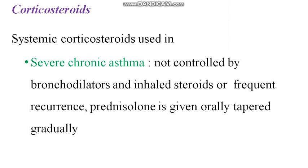Systemic corticosteroids are used in severe chronic asthma when it is not controlled by bronchodilators and inhaled steroids, or when there are frequent recurrent episodes. Usually we give prednisolone — it is orally started and then tapered gradually.